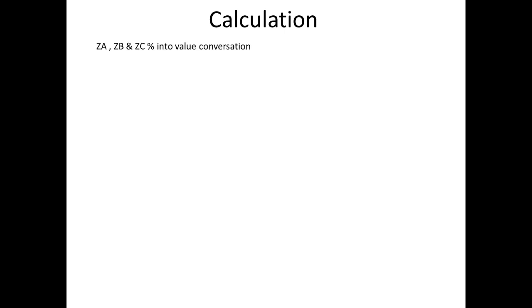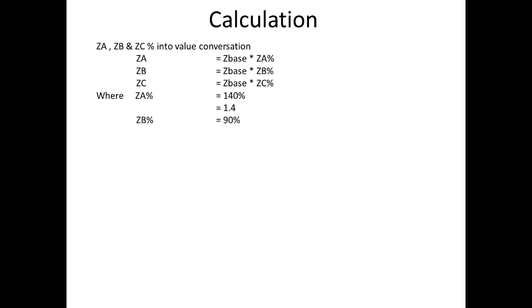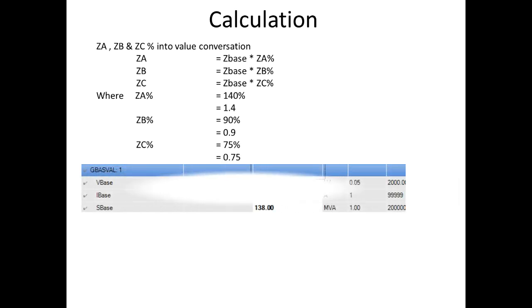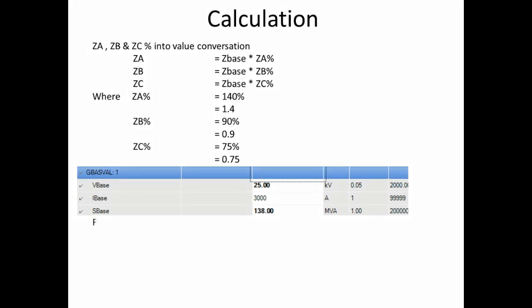We need values for testing this protection. First we have to convert the percentages into actual values: ZA equals Z_base times ZA percentage, similarly ZB equals Z_base times ZB percentage, and the same for ZC. ZA percentage is 140%, which is 1.4. ZB percentage is 0.9 and ZC is 0.75.